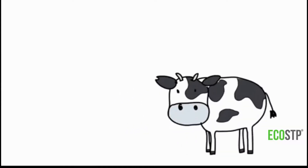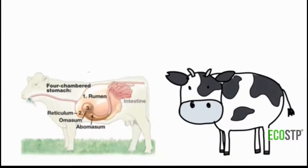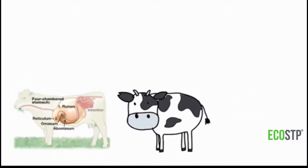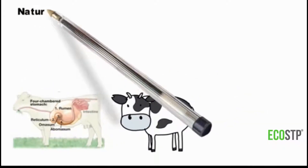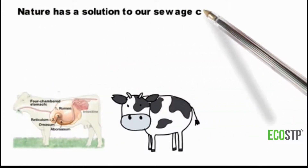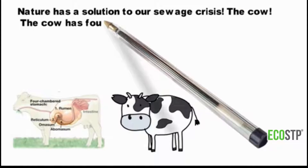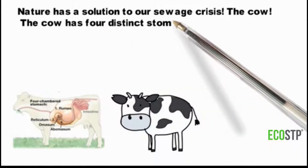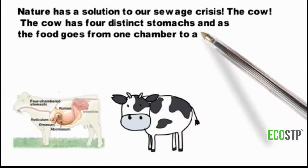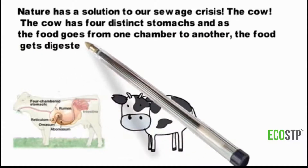The cow has four stomachs, called rumen, reticulum, omasum, and abomasum. As the food moves through them, it gets digested with the help of anaerobic bacteria — a process also called anaerobic digestion.